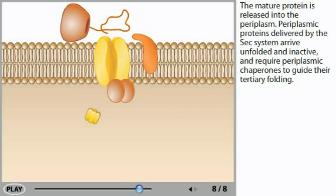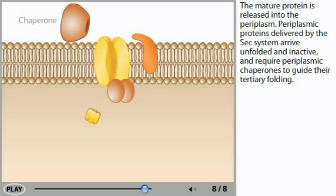Periplasmic proteins delivered by the Sec system arrive unfolded and inactive, and require periplasmic chaperones to guide their tertiary folding.